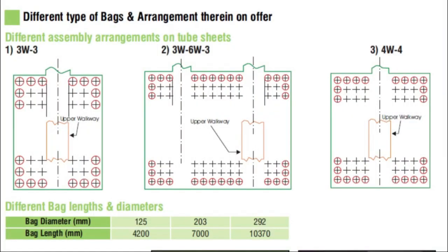Different types of bags and arrangements are available. Different assembly arrangements on tube sheets, different bag lengths and diameters, and different bag types are offered. Normally in RABH, LIDX woven glass wool type bags are preferable.